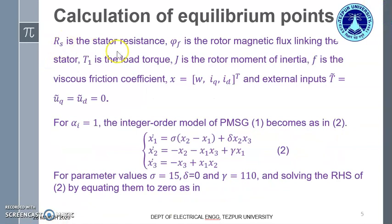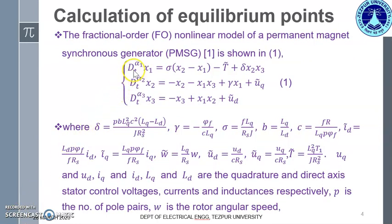The physical significance of rs, t1, and j is given. We replace all the alpha_i's by 1 — that is, alpha_1 = alpha_2 = alpha_3 = 1. This gives us the first derivative of x1 (x1_dot), the first derivative of x2 (x2_dot), and x3_dot respectively. We move on to the next slide.